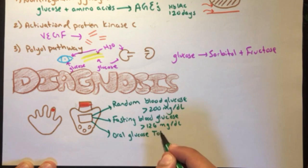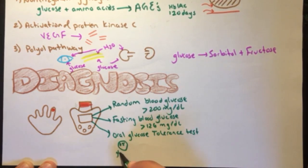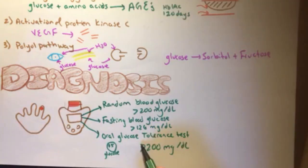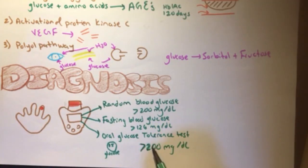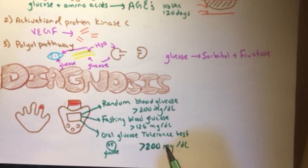Oral glucose tolerance test, in which a patient is given 75 grams of glucose with a reading of more than 200 mg per deciliter after two hours of taking the glucose, suggests that the patient is diabetic.